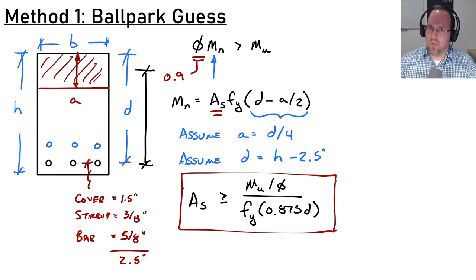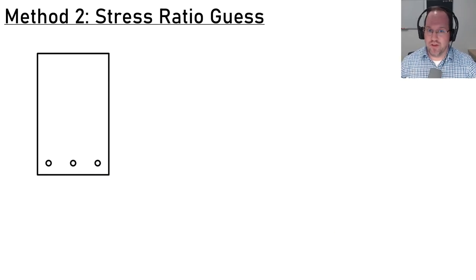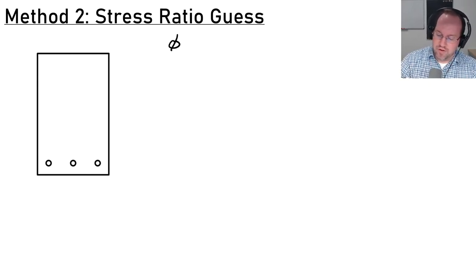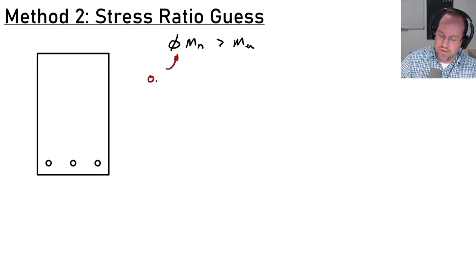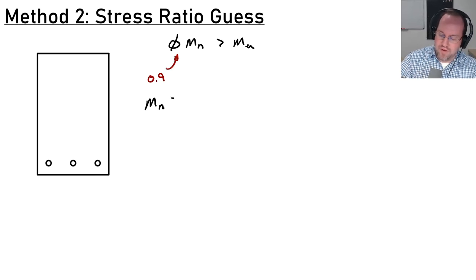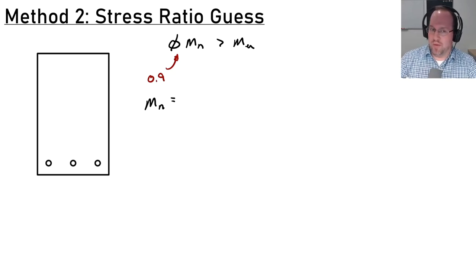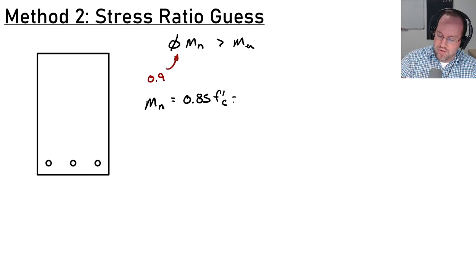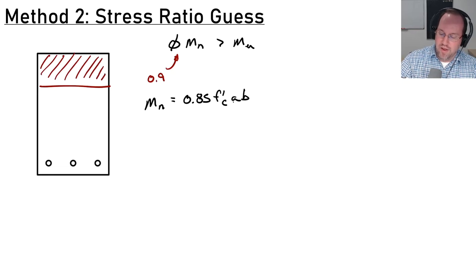If you want something more exact, the second method is known as the stress ratio guess, which is a little more involved. Again, the main objective is to ensure capacity is greater than demand and I'm still assuming φ = 0.9. I'll flip the capacity equation around — instead of looking at the tension force times a moment arm, I'll look at the compression force times a moment arm, which gives the same answer. That compression force is 0.85 f'c times a times b — a·b is the area of my compression block and the stress is 0.85 times the concrete strength.